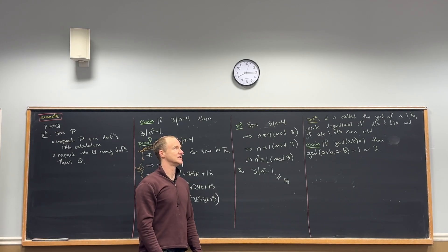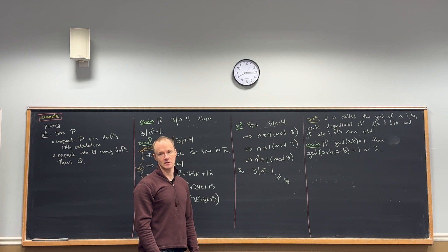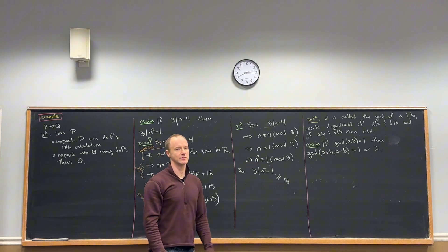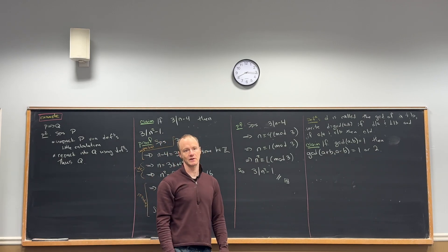But then the GCD of 5 and 7 is 1. But the GCD of 5 plus 7, which is 12, and 7 minus 5 is 2, is 2. So we can exhibit both of those happening.